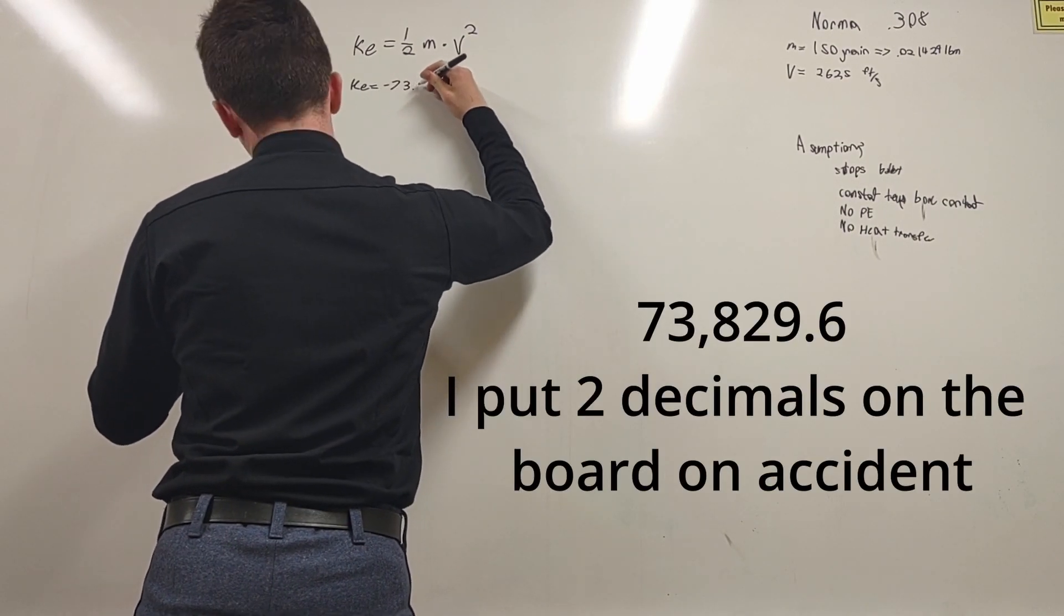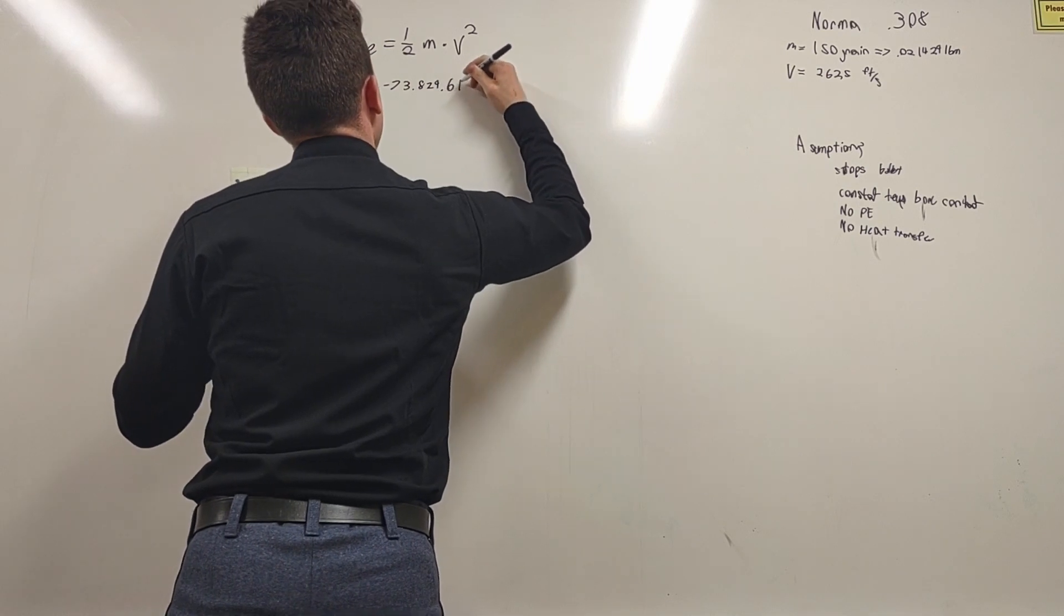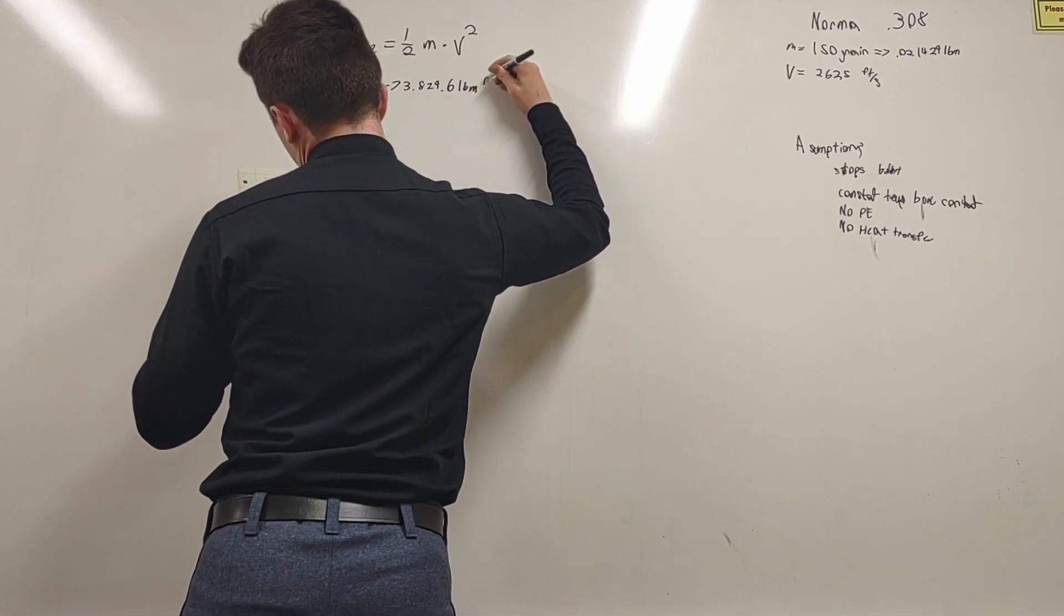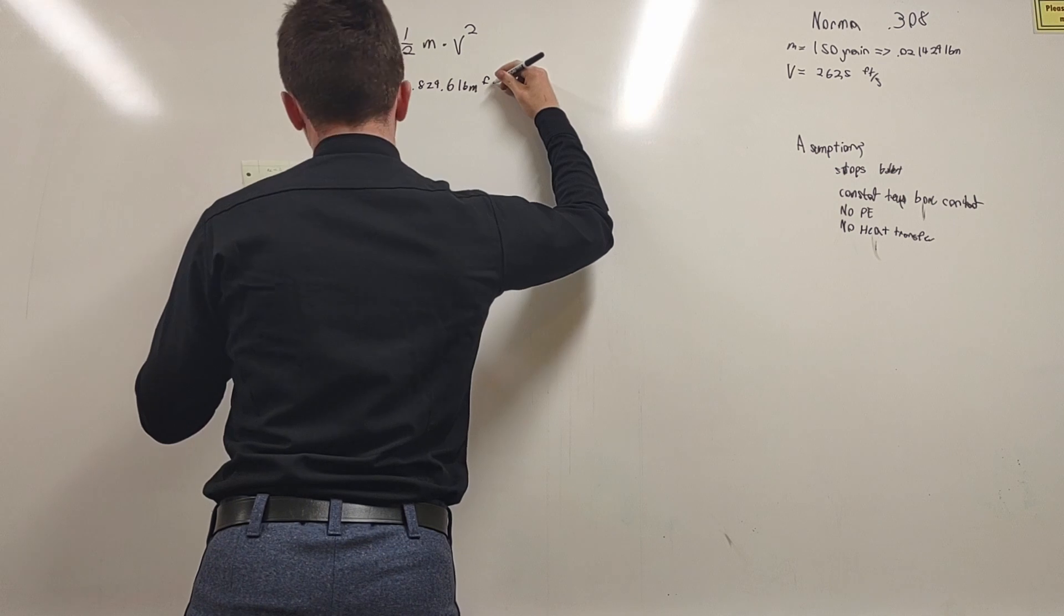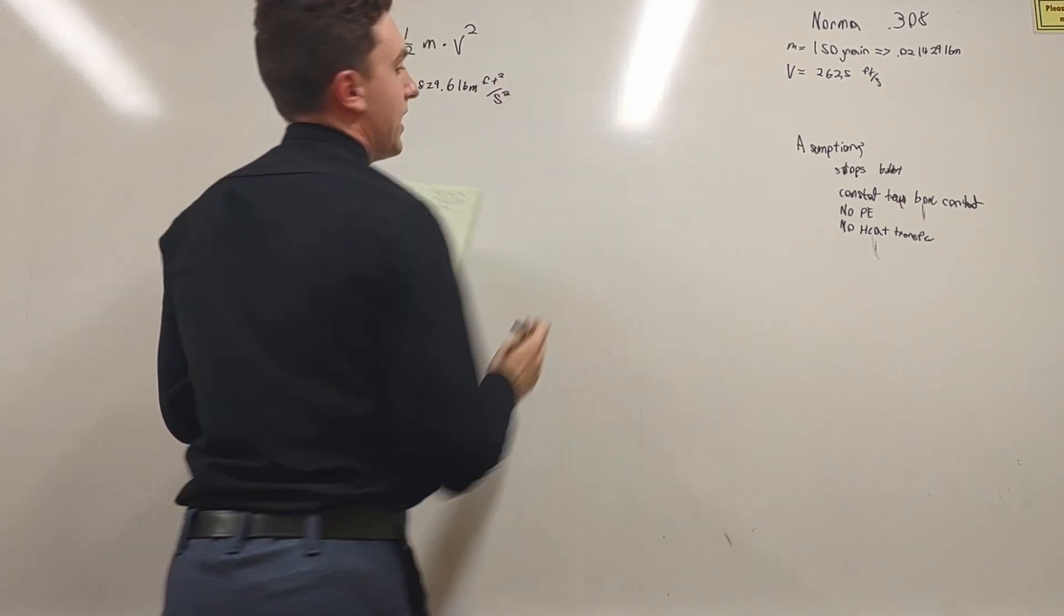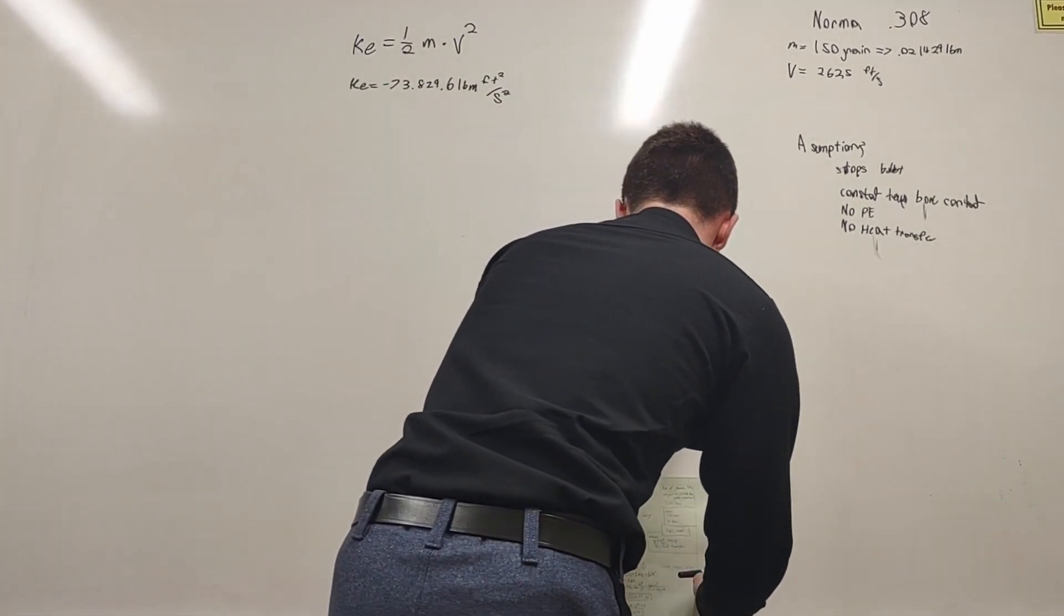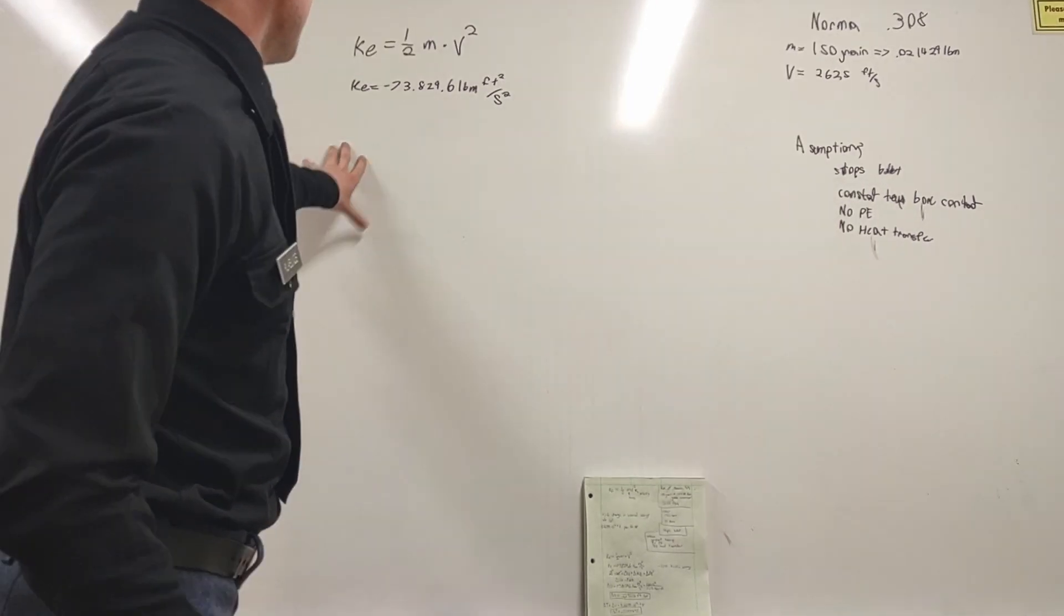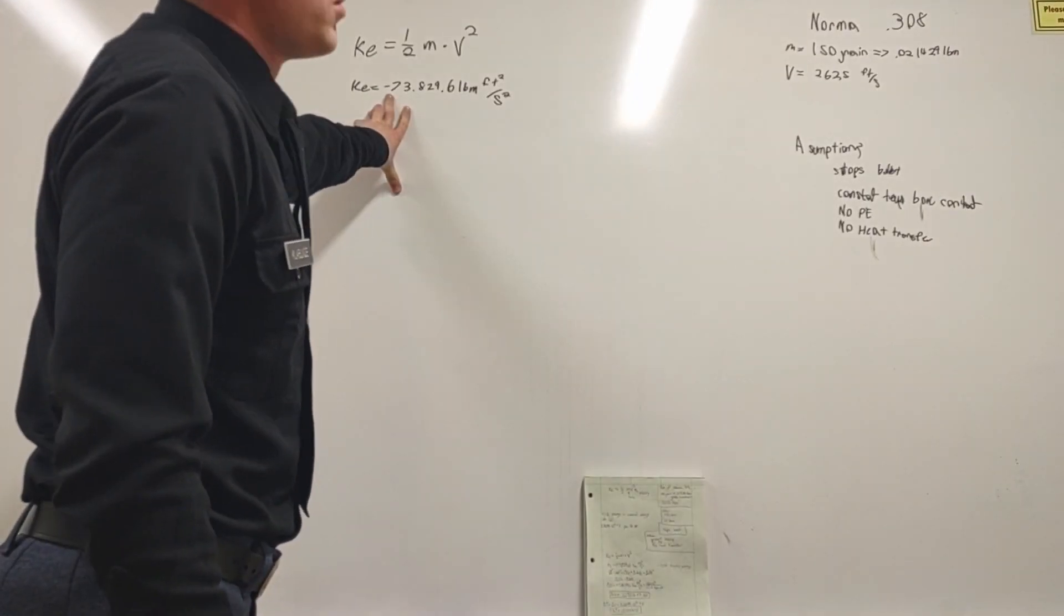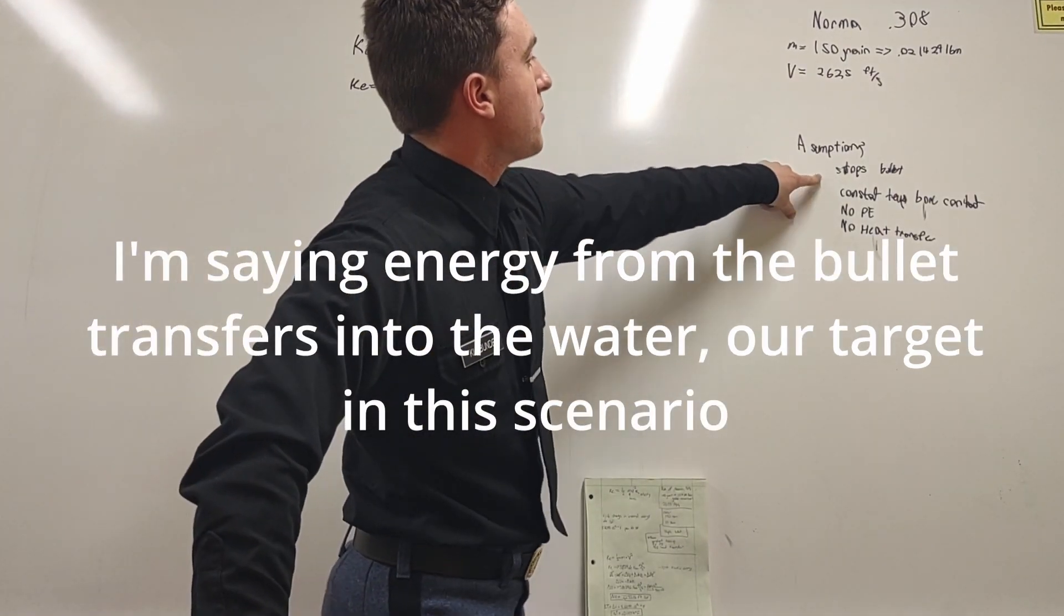Negative 73,829.6 LBM pounds foot squared over seconds squared. That sounds complicated, sounds really complicated, and I don't think you'll like that at all.